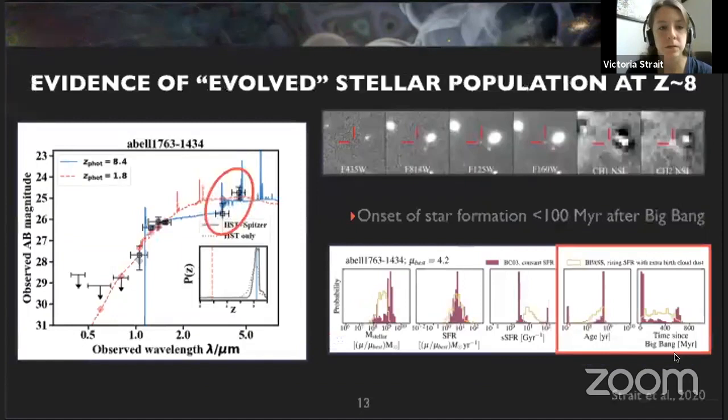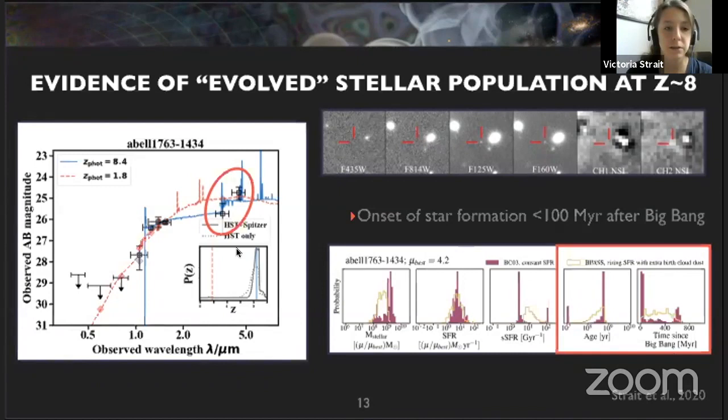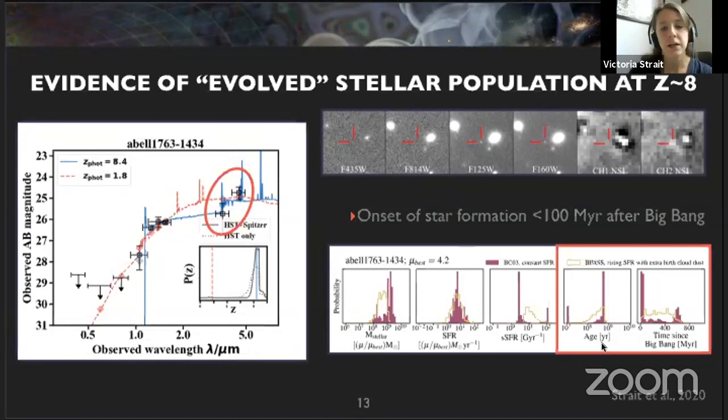The second cool object is behind cluster Abell 1763, which shows evidence of an evolved stellar population at redshift 8 — or as evolved as it can be at redshift 8. The Spitzer fluxes are straddling the Balmer break, showing light from old stars, meaning this galaxy is quite old. The age distribution peaks just before 10^9 years, implying a quite early formation time — less than 100 million years after the Big Bang.